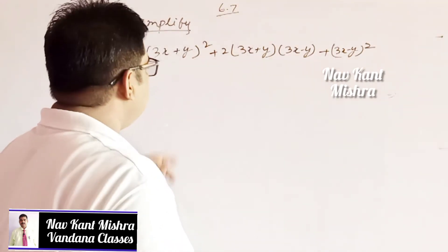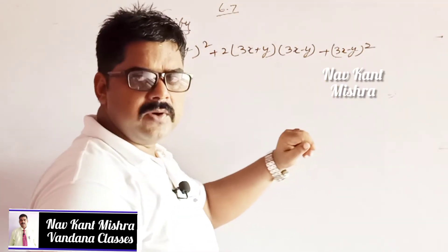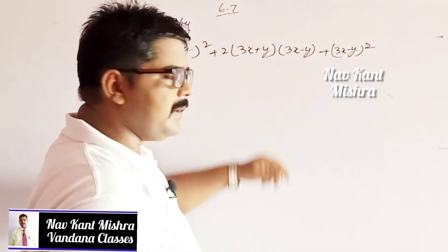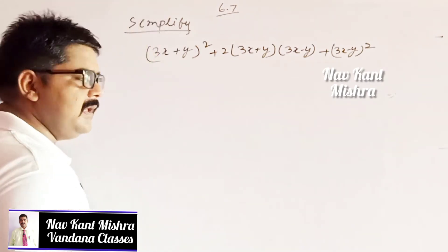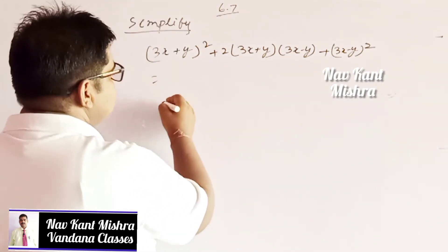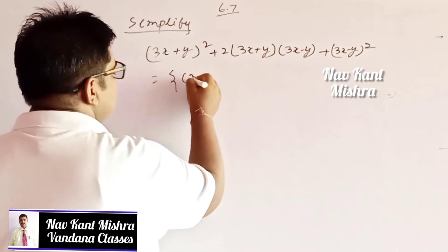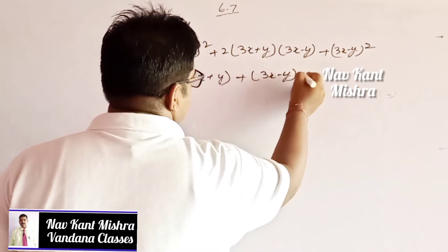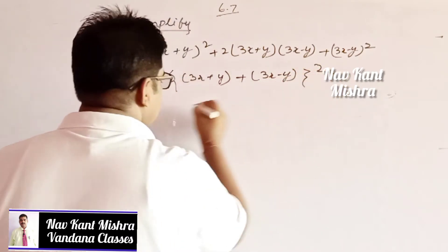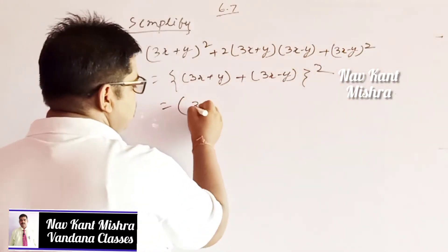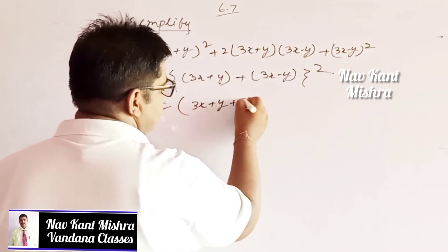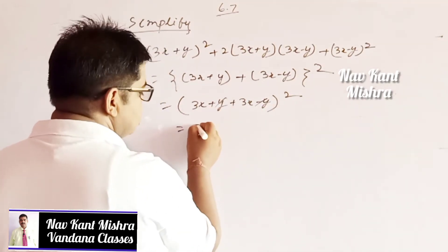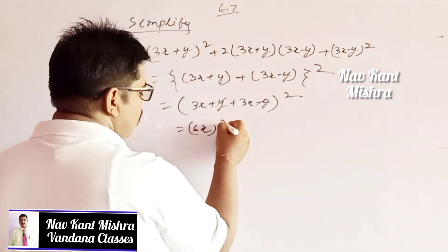This next question is based on the formula a square plus 2ab plus b square. Consider 3x plus y as a and 3x minus y as b. Then it can be written as 3x plus y plus 3x minus y whole square. On simplification, y and minus y cancel, and 3x plus 3x gives 6x, so the result is 6x whole square, which equals 36x square.